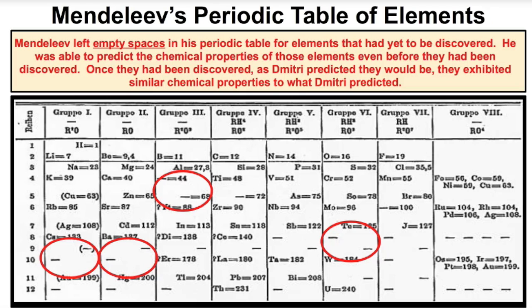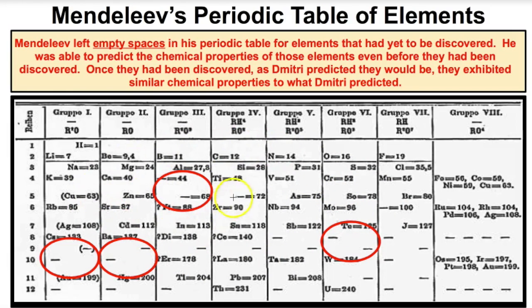Let's take a look at Dmitry Mendeleev's periodic table. If we look at his very first periodic table, it looks a lot different than the periodic table we see today. With only about 60 or so elements known at the time, this is what it looked like — this was his periodic table.